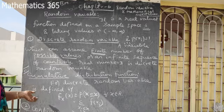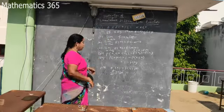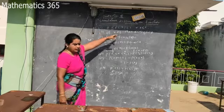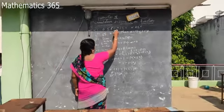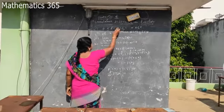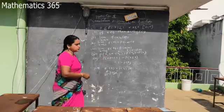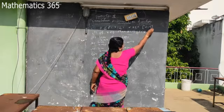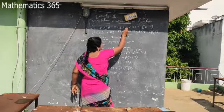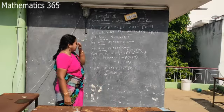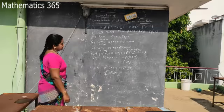The cumulative distribution function has specific properties. Probability values have a minimum value of 0 and maximum value of 1. The cumulative function F of x is non-decreasing; if x less than or equal to some value, then F of x less than or equal to F of that value.